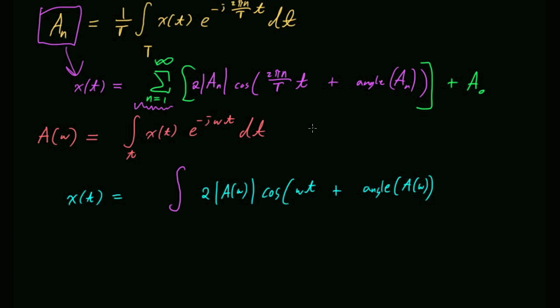What frequencies am I integrating over? D-omega — integrating over all frequencies — zero to infinity. And there's a 1/(2π) term out front that I'm never quite sure where it comes from, but there's a scale factor of 1/(2π) out front going the other way. That's what we're doing: taking our signal and breaking it into a sum of cosines.